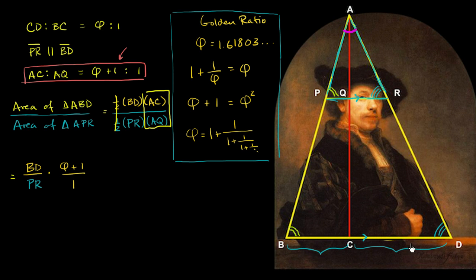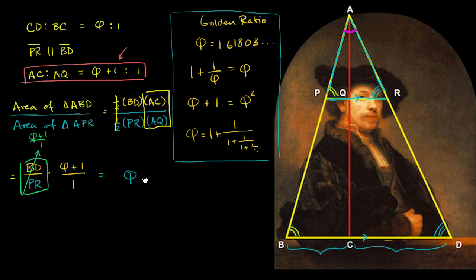So the ratio of BD to PR is also phi plus 1. That means our full ratio is (phi plus 1) times (phi plus 1), which equals (phi plus 1) squared. And we deserve a drum roll now — the ratio of the area of the larger triangle to the smaller triangle is (phi plus 1)². And since we already saw that phi plus 1 equals phi squared, there are all sorts of interesting ways you can continue to analyze this.